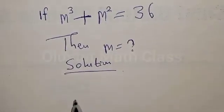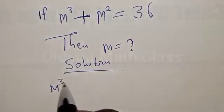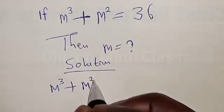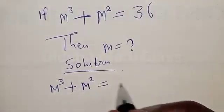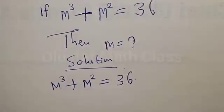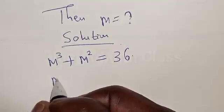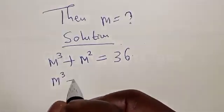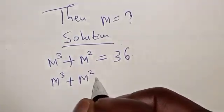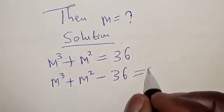We have m³ plus m² is equal to 36. Now this can be expressed as m³ plus m² minus 36 is equal to 0.